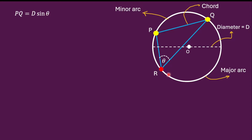Point R is an arbitrary point and can be taken anywhere on the major arc or anywhere on the minor arc. For example, if R is placed on the minor arc and we join P to R and R to Q, the angle formed is different from theta. However, one can prove that regardless of whether R is on the minor arc or the major arc, the chord's theorem holds irrespective of the position of R.